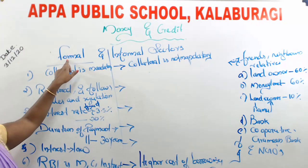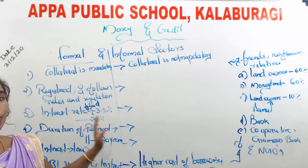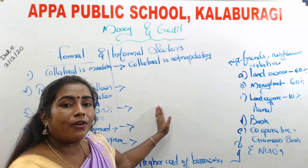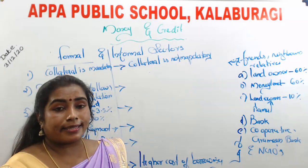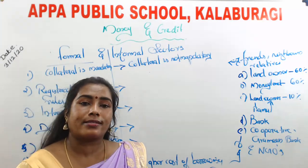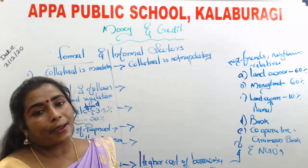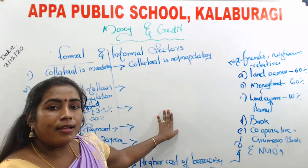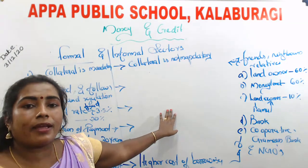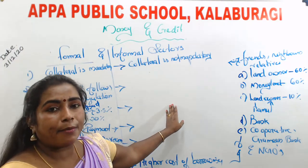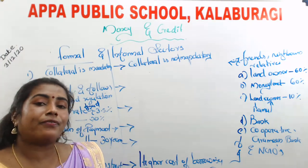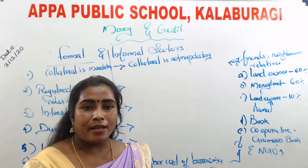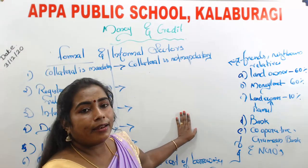Why is collateral compulsory? If the borrower fails to repay the loan, the lender has the right to sell the collateral asset and recover their payment. Without collateral, if the borrower fails to repay, it would be a loss for the bank. Banks use the money of depositors, so whenever depositors demand their money back, banks must repay. That is why banks never lend without collateral.